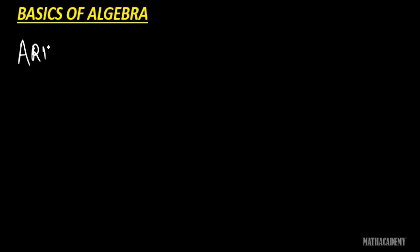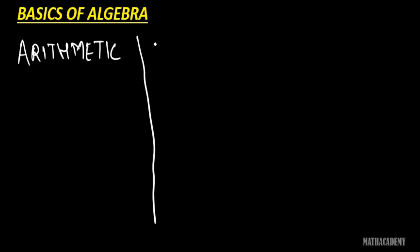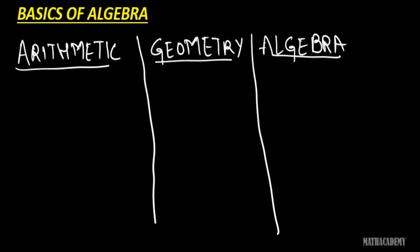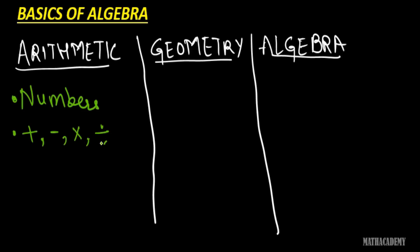Now we know that one branch of maths is arithmetic, one is geometry, and the third one which we will read now is algebra. In arithmetic we deal with numbers — natural numbers, integers, whole numbers, positive numbers, negative numbers — and we perform operations like addition, subtraction, multiplication, division and so on.